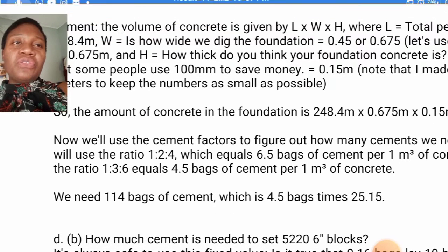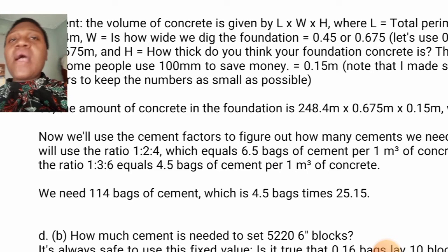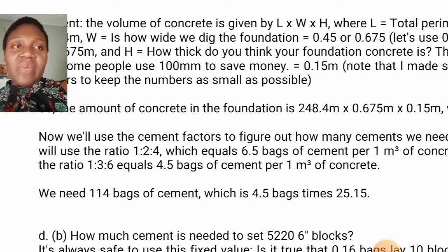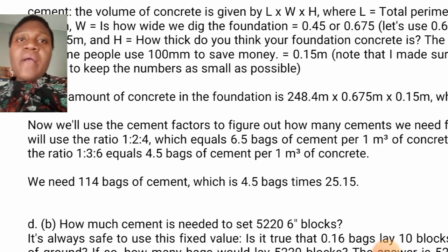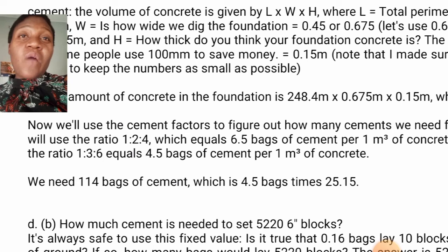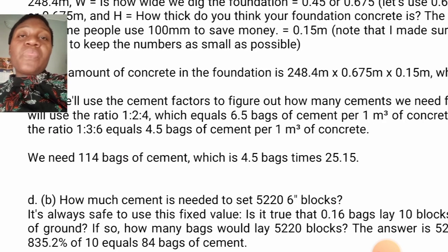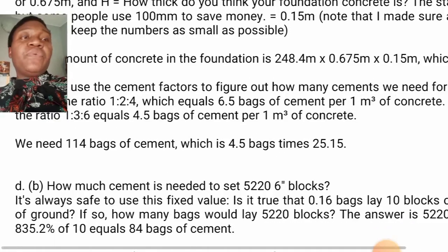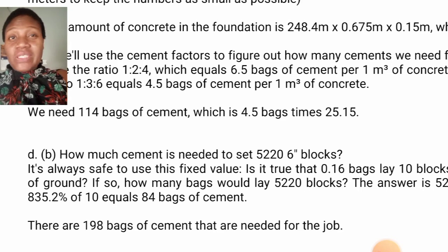We use a cement factor based on the mix ratio. Using a ratio of 1:3:6, that gives us 4.5 bags of cement per one cubic meter of concrete. Multiplying 4.5 bags by 25.15 cubic meters gives us approximately 114 bags of cement needed for the foundation concrete.